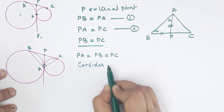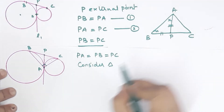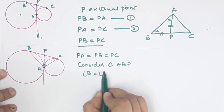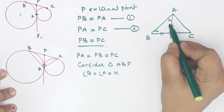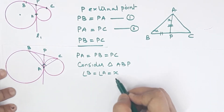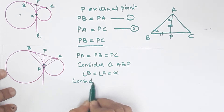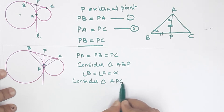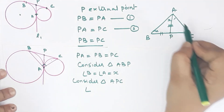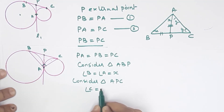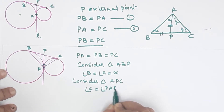Consider triangle ABP. Angle B equals angle PAB, both equal to x. Consider triangle ACP. Angle C equals angle PAC, so angle PAC equals y.